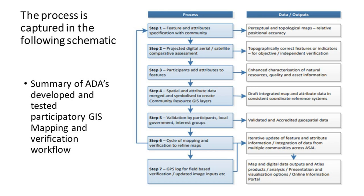Step five was to bring the map back to participants to validate that what appears on the map reflects how they know their communities. Step six was to do a cycle of mapping and refining until a near-exact map was produced, combining GIS aerial data with community-verified knowledge. There was also a GPS log of all the points where resources were mapped in the community.